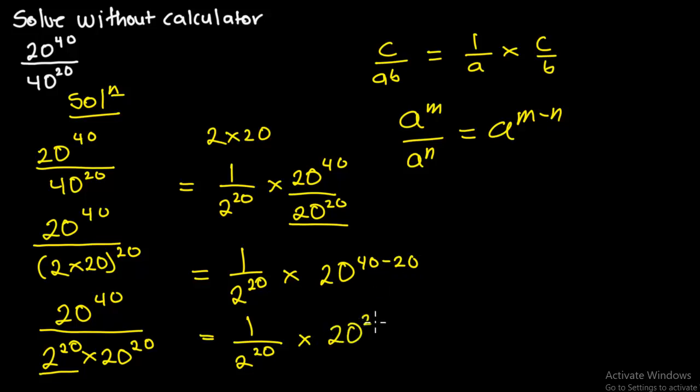So we are going to have 20 to the power 20 all over 2 to the power 20. Now we are having same exponents, so I'm going to factorize the exponent out. In that I'm going to have 20 over 2 all exponent 20. Now from here, 20 cancels into 2 once and then into 10, so we are going to have 10 to the power 20 as our final answer.